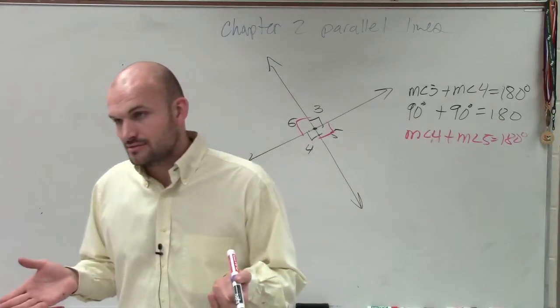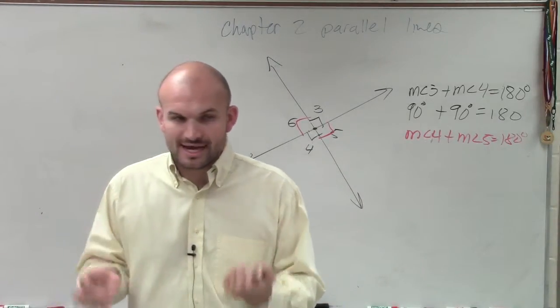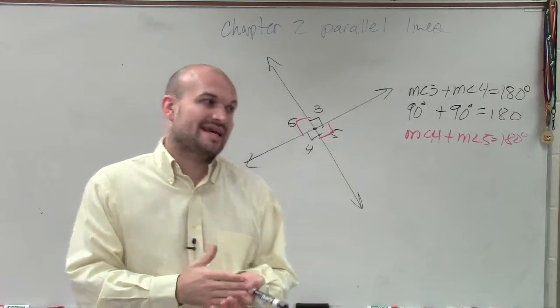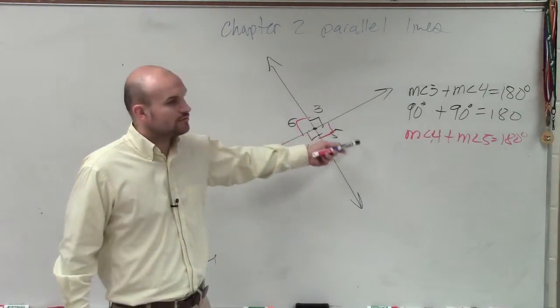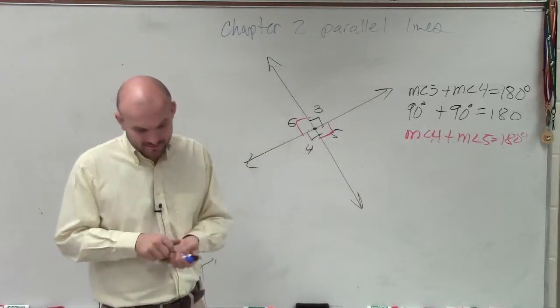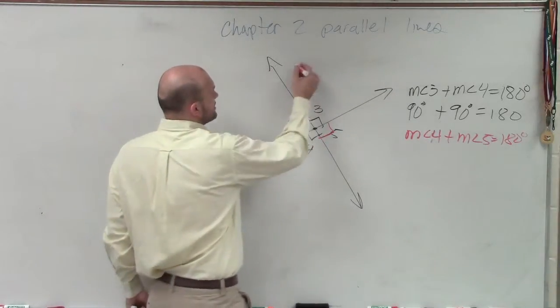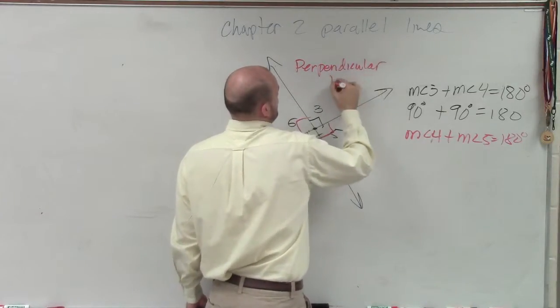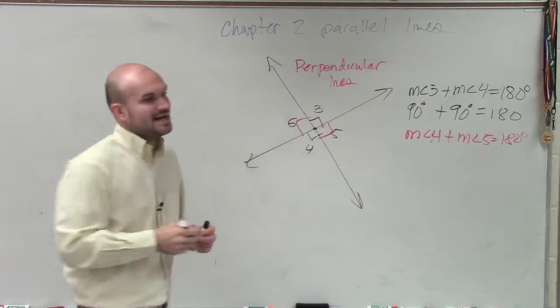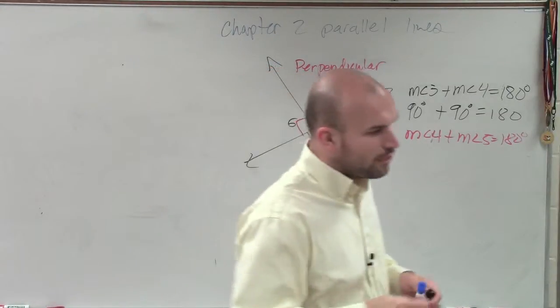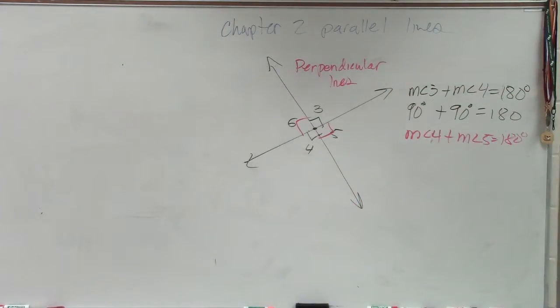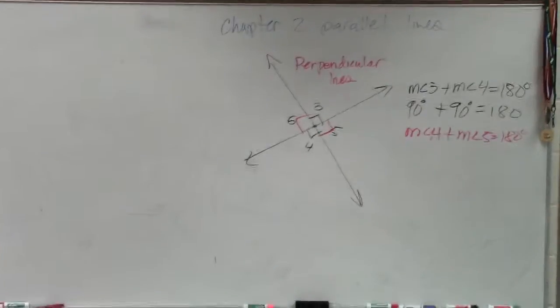When two lines intersect and they create right angles, we call these perpendicular lines. So you can also just write in above, these are what we call perpendicular. We have perpendicular lines where their angles form 90 degrees. Guys, I really wanted to get you guys some work today.